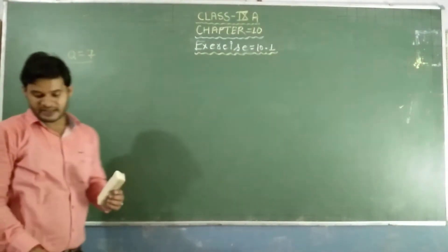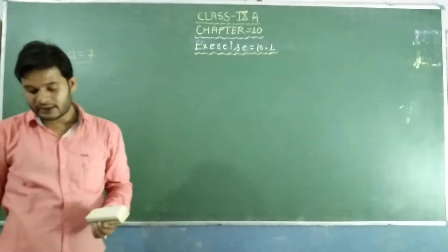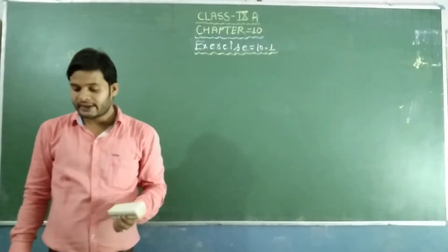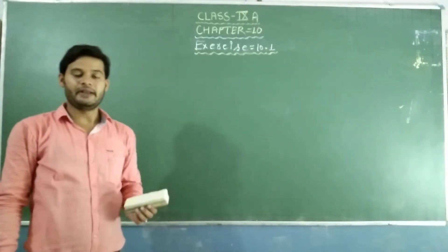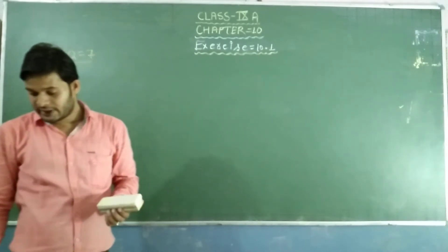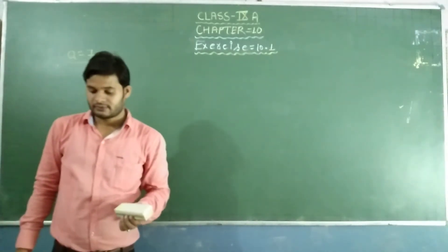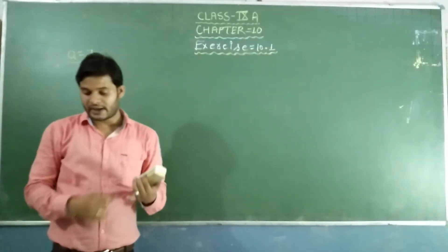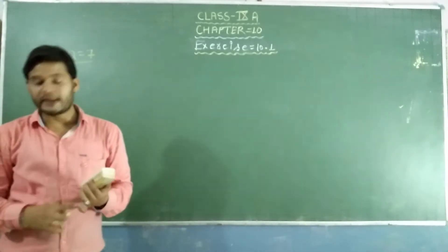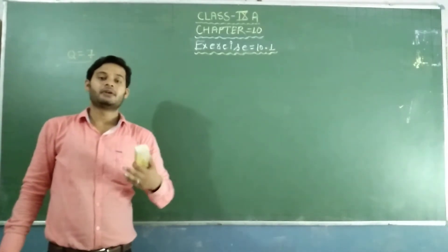Question number 7 is that an angle is equal to 8 times its complement. Determine its measure. An angle is equal to 8 times its complement.